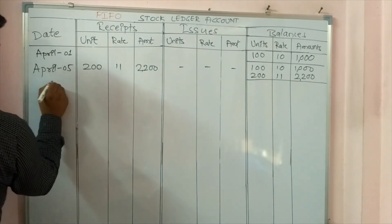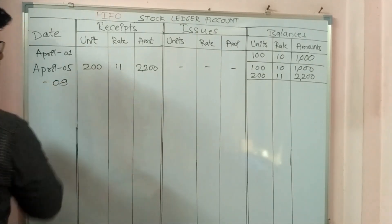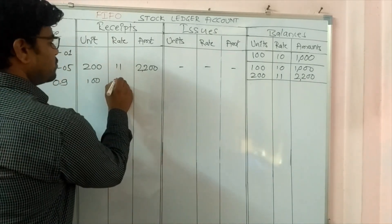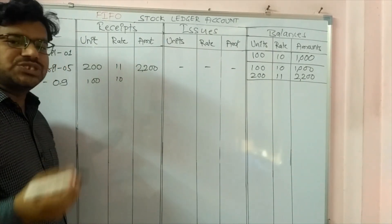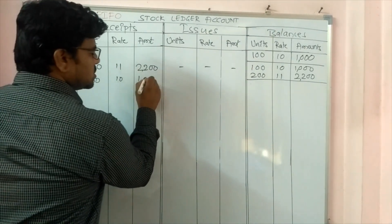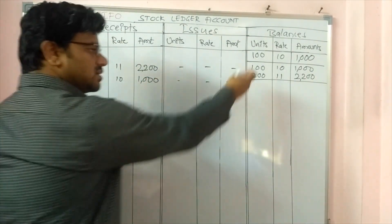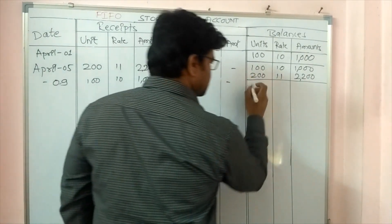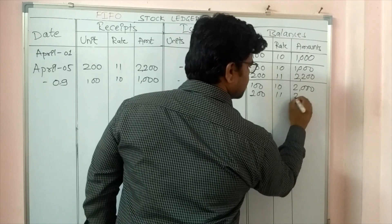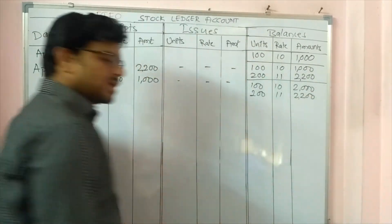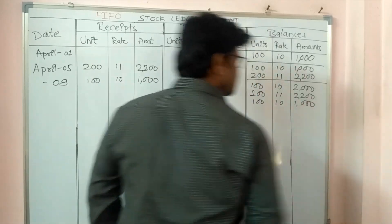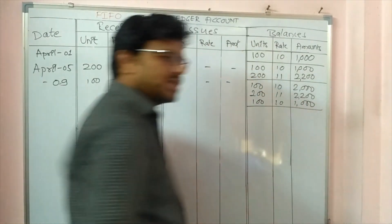Further, on April 9th I received 100 more units at rupees 10. This is new stock and because it is different stock I am not going to add it to the previous lot — I will keep it separate and write it just below. My account closes as on that date.